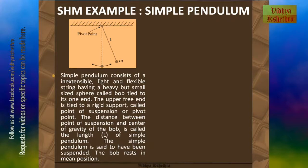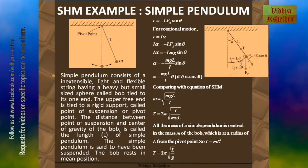The simple pendulum hangs in equilibrium position as shown by the dotted lines, where the bob rests in the mean position. For deriving an expression for the time period of the simple pendulum, we consider the forces acting on the bob: the tension T of the string in the upward direction, and the force due to gravity, which can be resolved into mg sin θ and mg cos θ. It is the mg sin θ component that makes the pendulum oscillate.